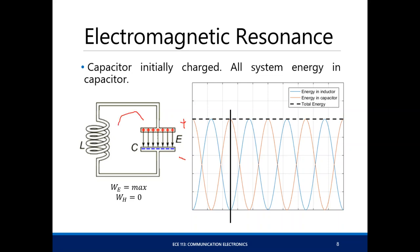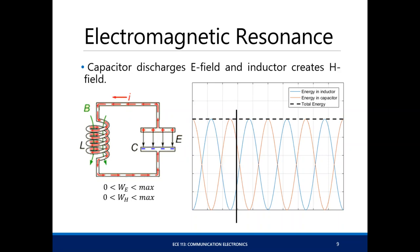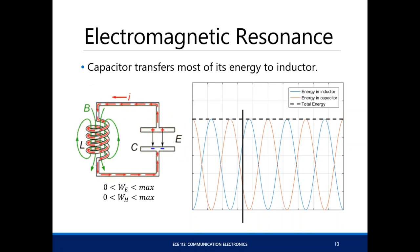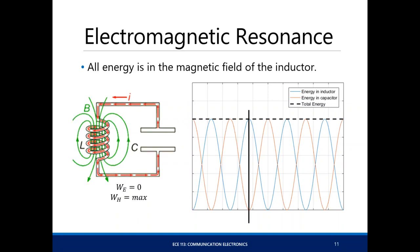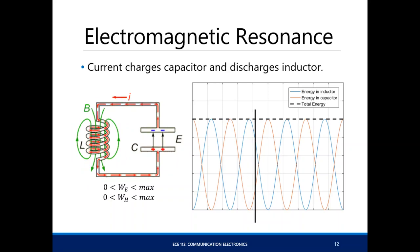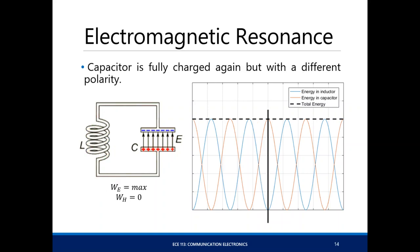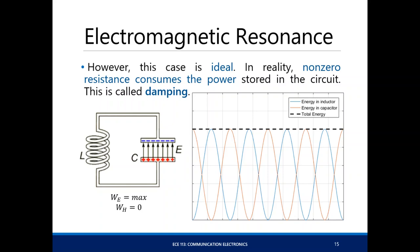Most of the energy is initially stored in the electric field of the capacitor. That energy is transferred from the electric field and converted to a magnetic field, then vice versa, transferred back to an electric field. However, this is the ideal case. In reality, non-zero resistance consumes power stored in the circuit — this is called damping. The wires exhibit some non-zero resistance, converting current passing through them back to heat, and eventually the energy is dissipated. In the presence of dampers, the characteristic equation changes accordingly.